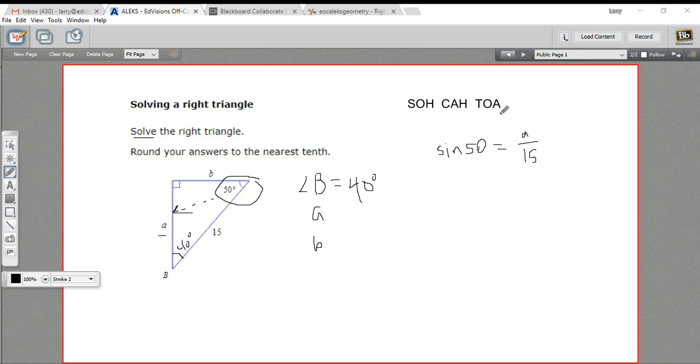And then we would solve this for A. To do that, all we have to do is multiply both sides by 15. So A is just 15 times the sine of 50. I'm going to get out my calculator, hit sine, and I get 0.766 something. And then I'm going to multiply that by 15, and I get, if we round this to the nearest tenth, this would be 11.5.